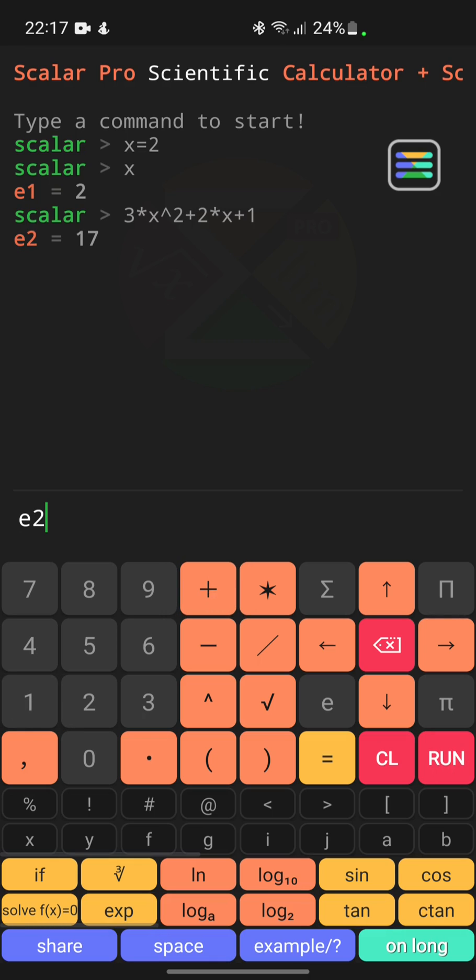Going further, the argument can also be used in the definition of a new argument. To do this, let's restore the last entered expression by clicking the up arrow, and then moving the text cursor to the beginning of the expression by long clicking the left arrow. At the beginning of the expression, we add y equals, and then click run. Scalar immediately tells you that the new argument has been registered.